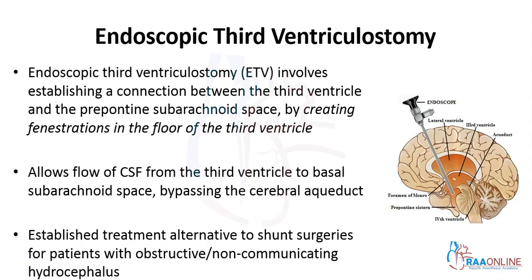Endoscopic third ventriculostomy involves establishing a connection between the third ventricle and the pre-pontine subarachnoid space by creating fenestrations in the floor of the third ventricle. As seen in the picture on the right, the endoscope is inserted through the cortex into the lateral ventricle, onwards to the third ventricle and the pre-pontine space, bypassing the aqueduct and the fourth ventricle. This allows the flow of CSF from the third ventricle to the basal subarachnoid space.